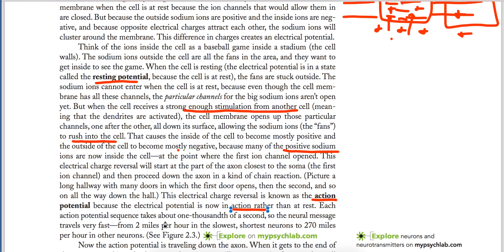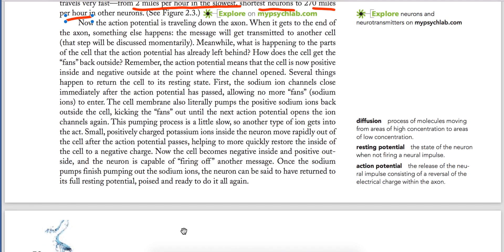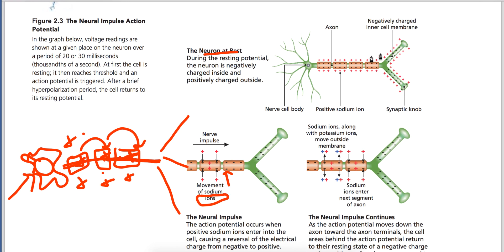Each action potential sequence takes about one-thousandth of a second. The neural message travels very fast — from 2 miles per hour in the slowest, shortest neurons, to 270 miles per hour in others. So the message transfer takes only one-thousandth of a second, and speed ranges from 2 miles per hour at the slowest to 270 miles per hour normally.